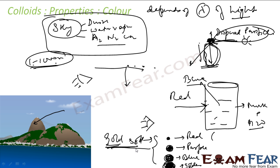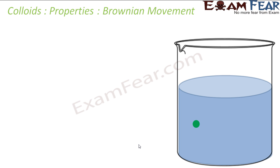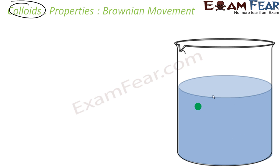The next property is Brownian movement. Please note this applies only to colloids. The sol particles move in a random zigzag path, and this type of motion is called Brownian movement. It is named after its discoverer, Robert Brown, who first observed this zigzag movement of pollen grains in water under a microscope.